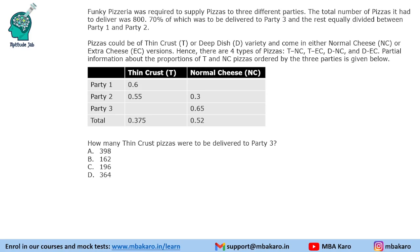Welcome to Aptitude Lab. This set is from CAT 2017 Slot 2 DILR. There is a pizza shop that has to supply pizzas to 3 different parties. The total number of pizzas to deliver is 800. 70% was delivered to party 3, which is 560. The remaining 240 is equally divided — 120 each to party 1 and party 2.